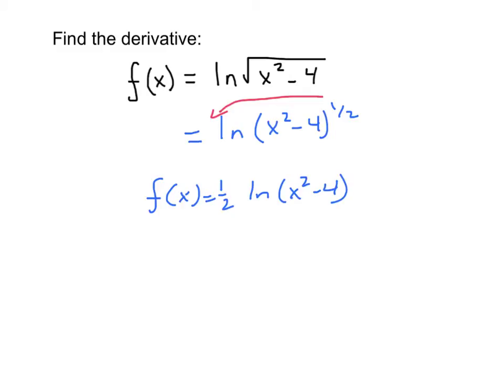This 1/2 we'll just treat as a constant multiple and then we can focus on the natural log part of this function. So using the chain rule, the derivative f prime of x is going to be 1/2 for the constant multiple times the derivative of the natural log of x squared minus 4.